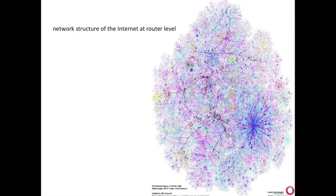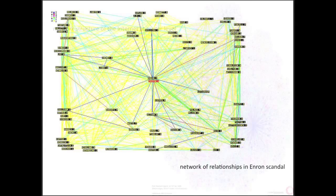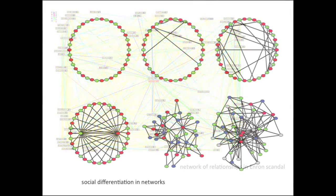It might seem odd to talk about networks from such different arenas in the same course, but the emerging science and math that you'll study in Networked Life shows otherwise. For instance, in recent years, scientists have identified structural properties of large networks that arise repeatedly despite the differing origins of that structure. One such property goes by the informal name of the six degrees of separation — the idea that there is often a short path of friendships connecting any pair of people in a large social network.